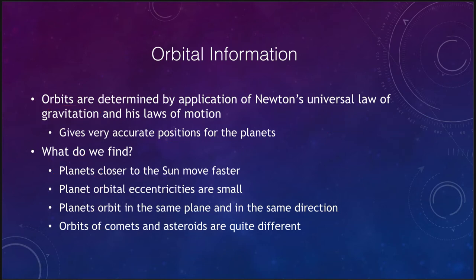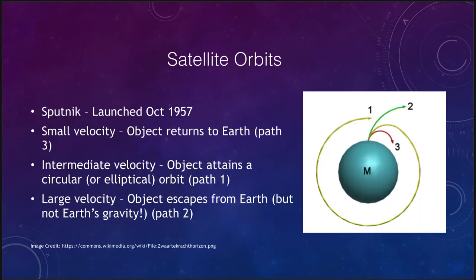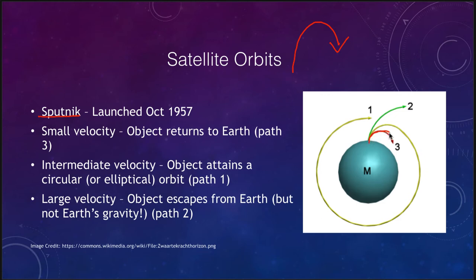Let's look at satellites and satellite orbits. One of the very earliest satellites was Sputnik, launched in October 1957, so we've had satellites in orbit for many decades. What do we need to get something into orbit? If you throw a ball up in the air it doesn't go into orbit — it heads up, slows down, and comes back down. If you don't throw something with enough velocity, it returns to Earth — that's path three.